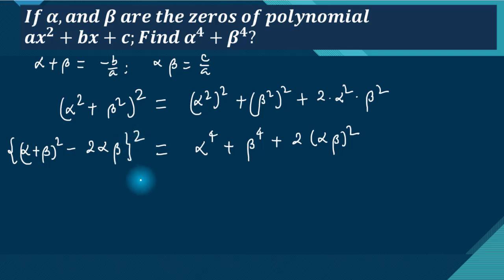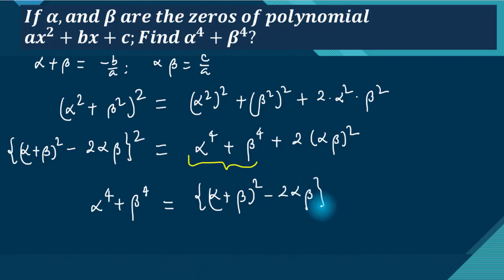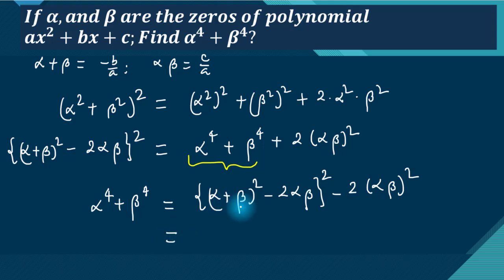Our target is alpha to the fourth plus beta to the fourth. On the left-hand side, alpha to the fourth plus beta to the fourth equals alpha plus beta whole squared minus two alpha beta, all squared, minus two alpha beta whole squared.